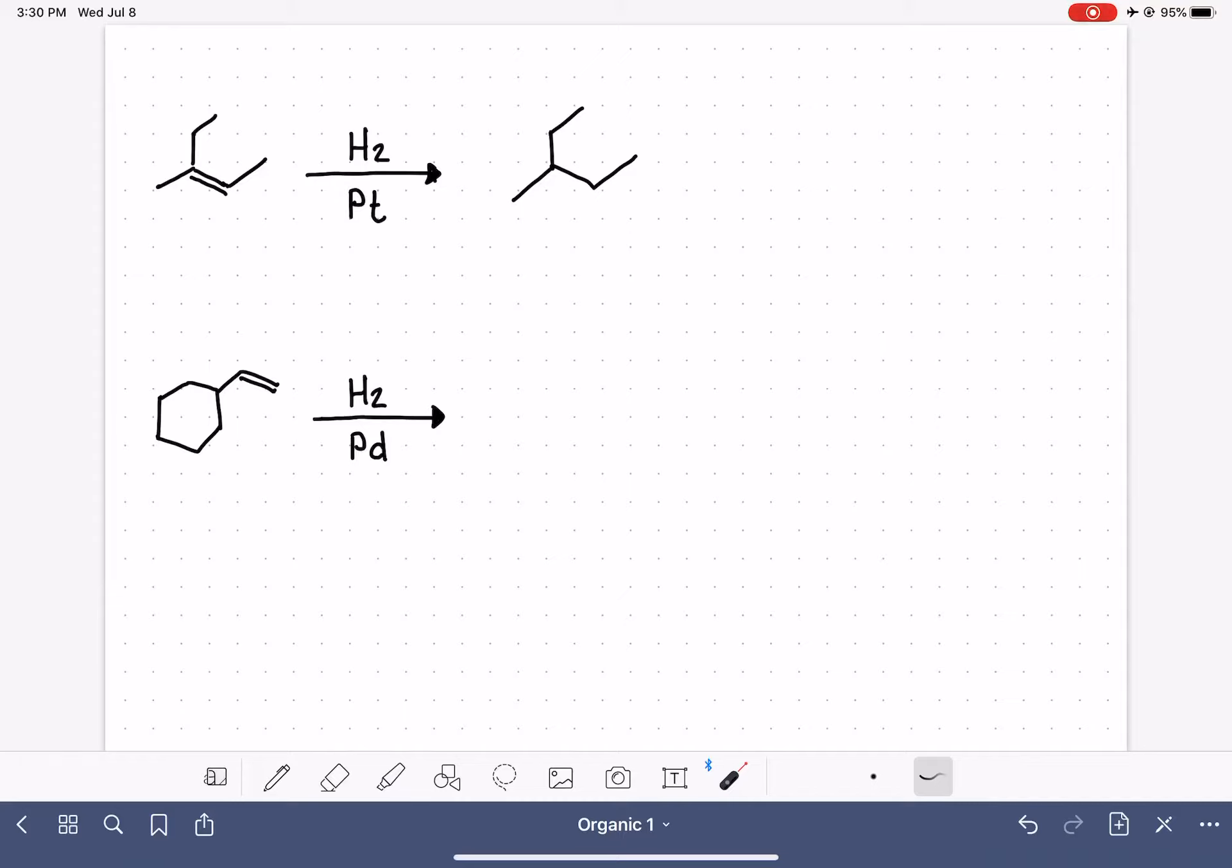Before we get too excited and say we're done, that was easy, remember that we still have to take a look at those carbons that we worked with and ask ourselves, did either of those carbons become chiral? Because if either of those carbons became chiral, then we've got to start thinking about the syn addition concept.